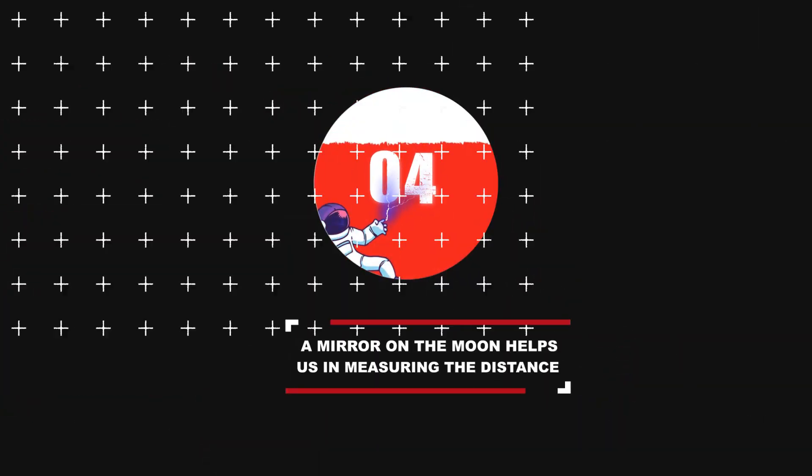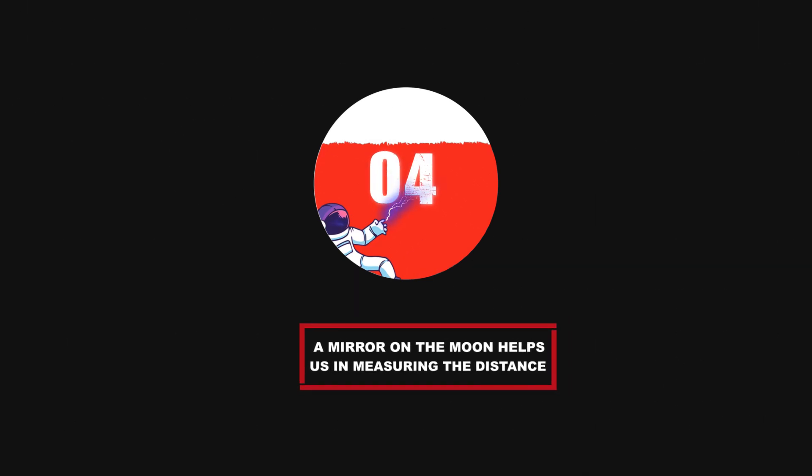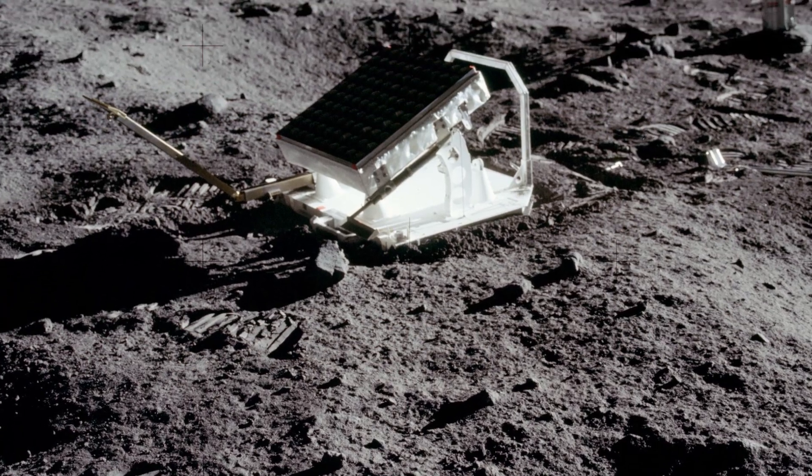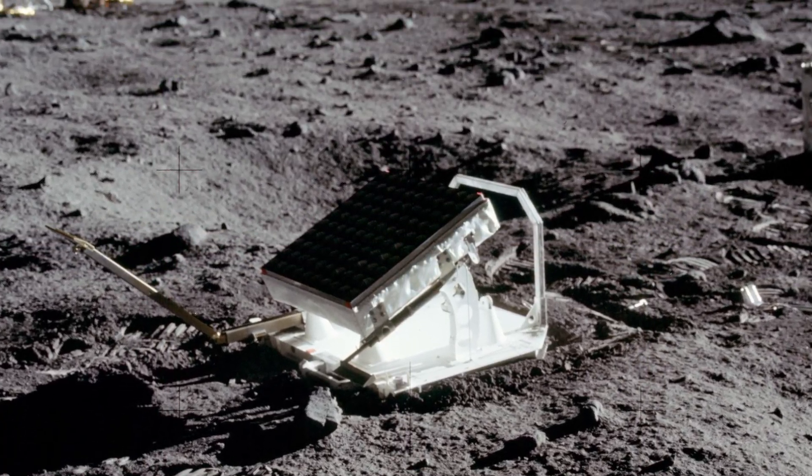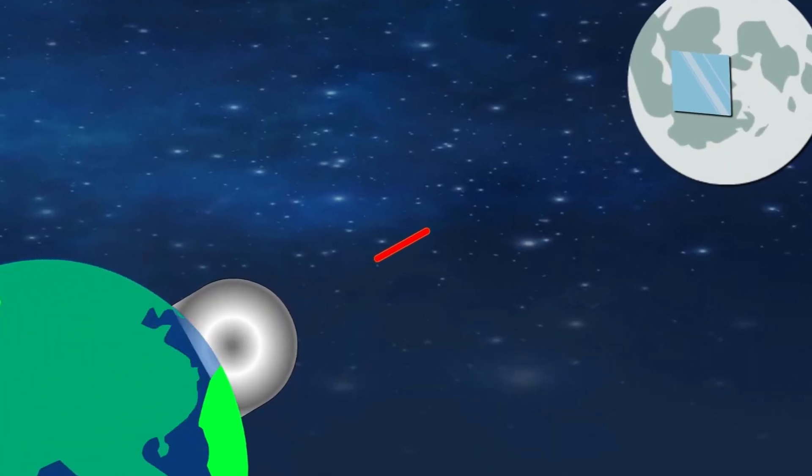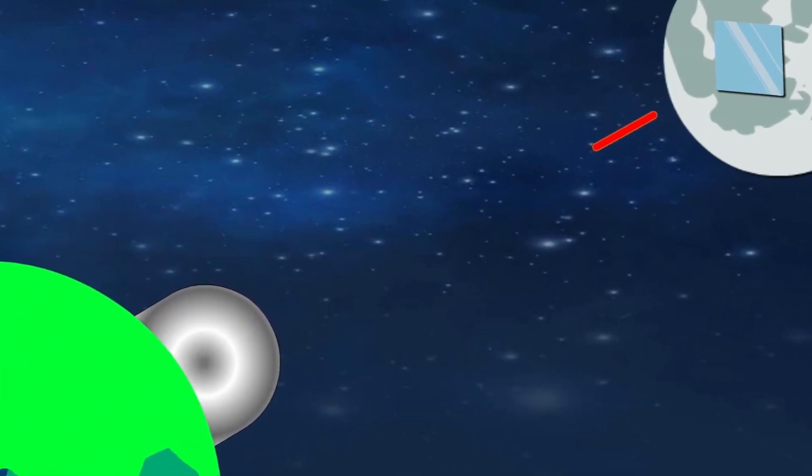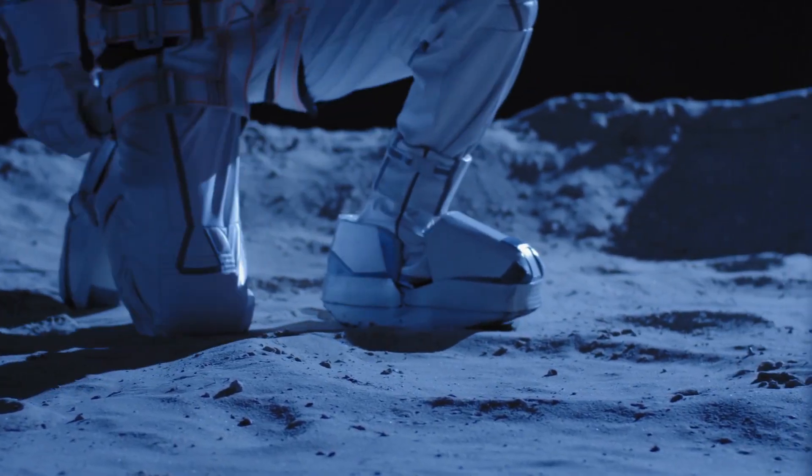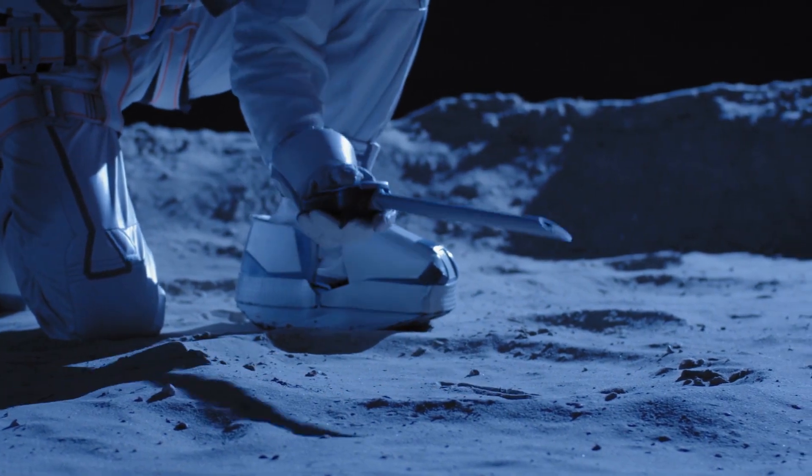Number 4: A mirror on the Moon helps us in measuring the distance. We got a two-foot-wide panel with a hundred mirrors placed on the Moon's surface pointed at the Earth. It's used to precisely measure the distance from the Earth to the Moon. Neil Armstrong and Buzz Aldrin set it on July 21, 1969, just before the conclusion of their final moonwalk. It's the last science experiment from the Apollo missions that runs even today. Earth telescopes send laser pulses off the Moon's mirror and intercept the returning pulse to measure the distance.